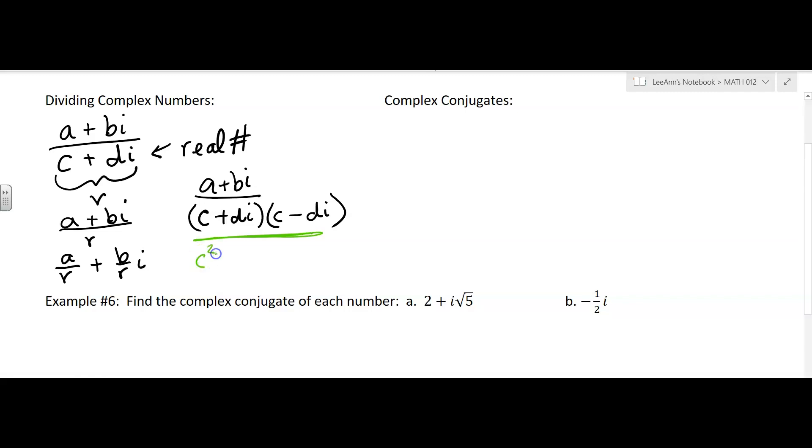See, you'd have c squared, and then you'd have minus d squared i squared. But remember, that's a negative 1. So then you're just going to have c squared plus d squared, okay? And that's going to be a real number.